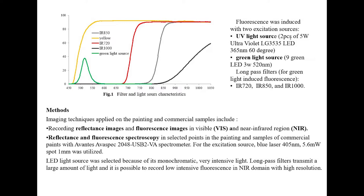The LED light source was selected because of its monochromatic, very intensive light. Long-pass filters transmit a large amount of light and it is possible to record low-intensity fluorescence in the near domain with high resolution. All images were recorded under the same conditions. Light sources were set at 45° from the normal, approximately 2 m from the painting. The camera was set at approximately 1 m from the painting. Fluorescence images were recorded in a dark room with a negligible amount of stray light. Calibration of the Samsung camera was performed using luminance standard LS6 spectra.